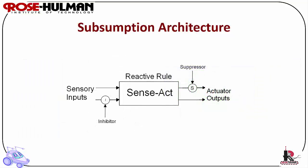Subsumption architecture is a form of reactive control developed by Rodney Brooks in 1985. It builds systems incrementally from simple parts to more complex parts. The complex parts use the simple existing components as much as possible. The layers are added from the bottom up, with the bottom layer being zero and the most simple.